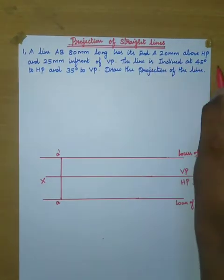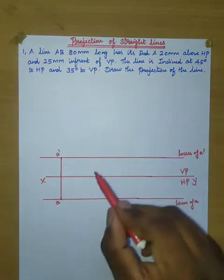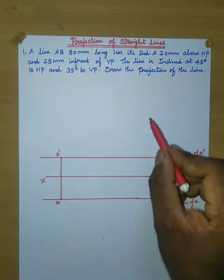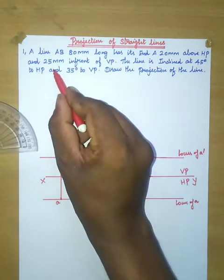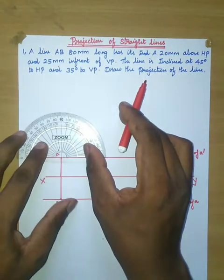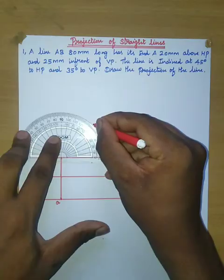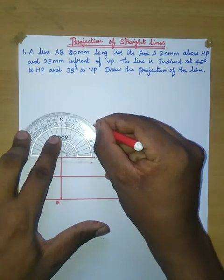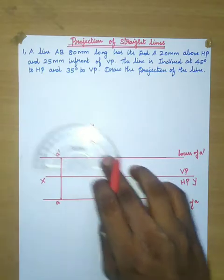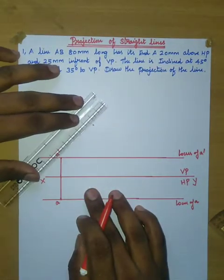Now the line is inclined at 45 degrees to HP. In HP, the inclination angle is 45 degrees — that is the front view inclination. So HP is going to be inclined to 45 degrees. At point A', draw a line at 45 degrees and at 80mm length, mark this as the front view direction.